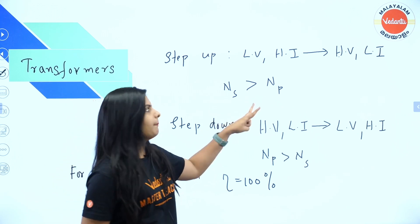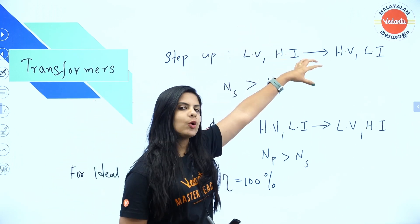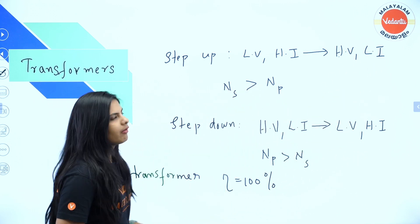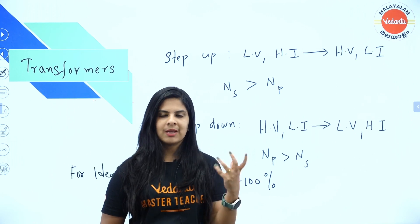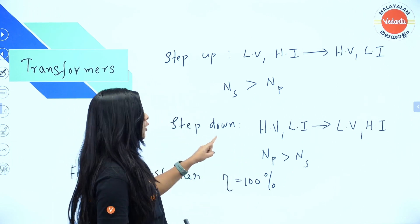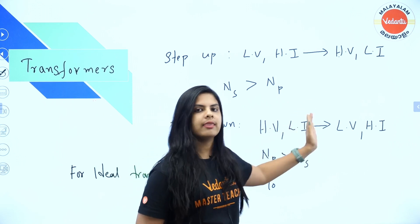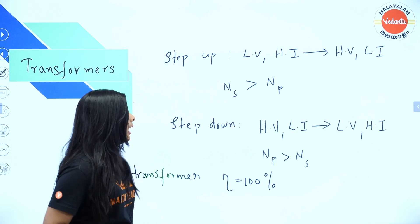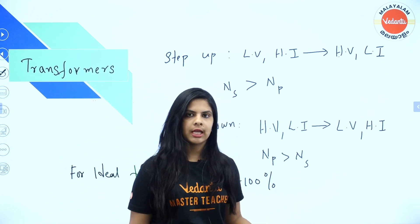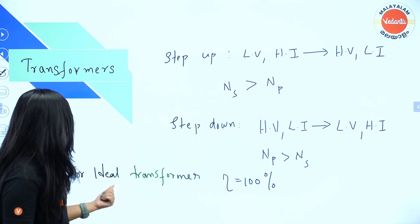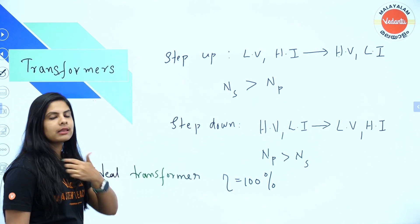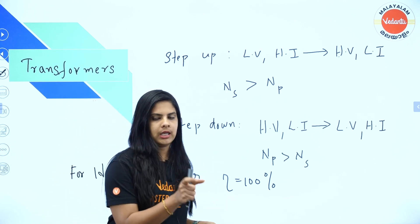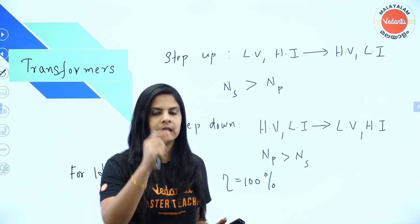A step-up transformer converts low voltage high current to high voltage low current, and the secondary coil number of turns increases. A step-down transformer converts high voltage low current to low voltage high current, and the primary coil number of turns is greater. For an ideal transformer, the input power equals the output power — 100% efficiency.